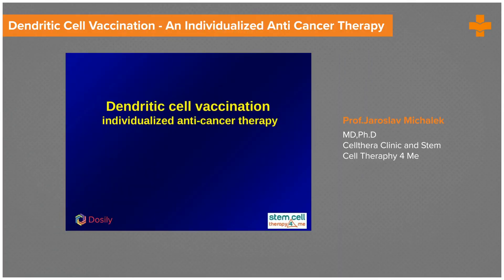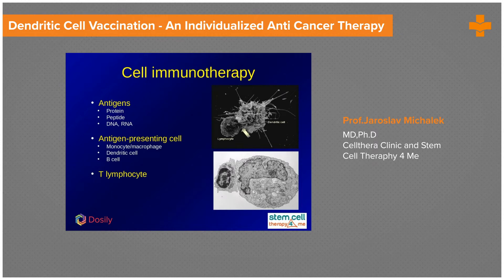I would like to switch gears towards dendritic cell vaccination for cancer treatment. I started the program at the University Hospital in the Czech Republic about 14 years ago, and currently we are using a protocol that was optimized for clinical use. For cell immunotherapy, we need to identify antigens that will be presented and identify antigen-presenting cells. In our case, we have a nice experience starting with monocytes from the peripheral blood and driving them towards dendritic cells.